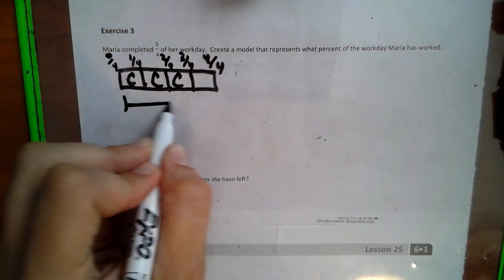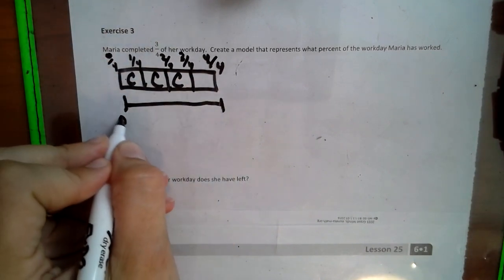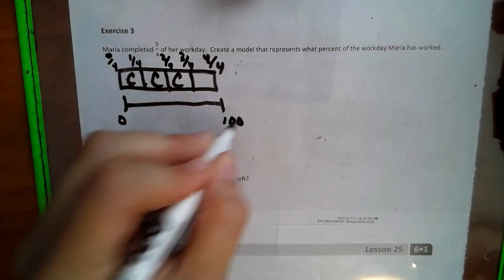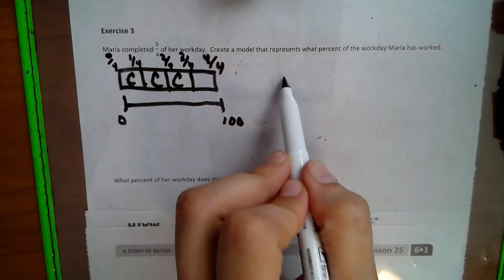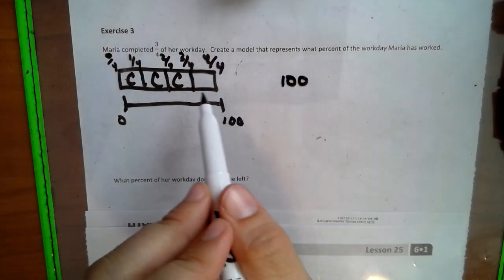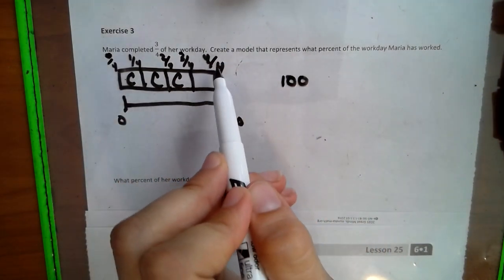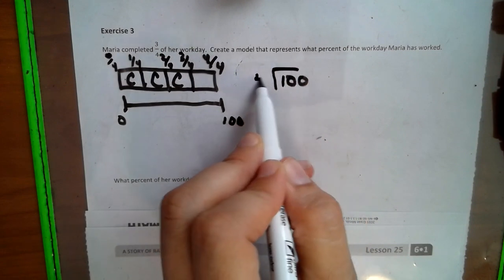So if we look at this as a percentage, this would be zero percent, and this would be a hundred percent, correct? So if we have a hundred percent, and we are splitting this picture into four equal parts, that means we can divide by four.